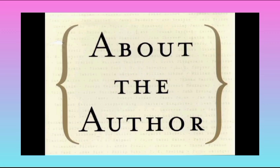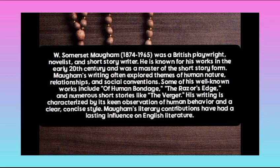About the author — William Somet Moham was born in 1874 and died in 1965. He was a British prolific novelist and a short story writer. He is known for his work in the early 20th century and was a master of short story form. Moham's writing often explores themes of human nature, relationships, and social conventions.